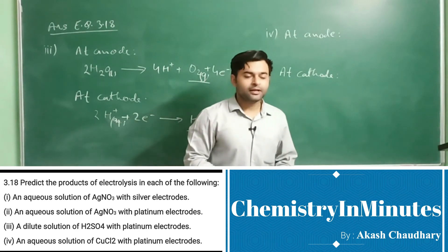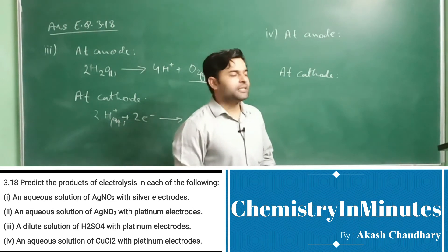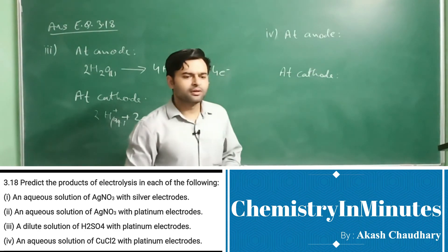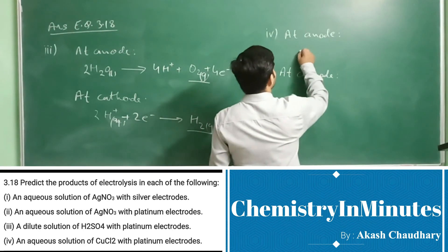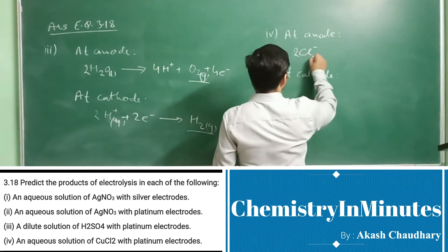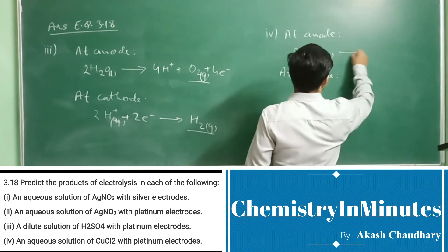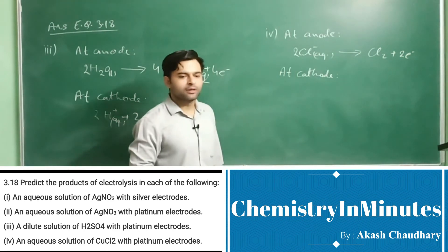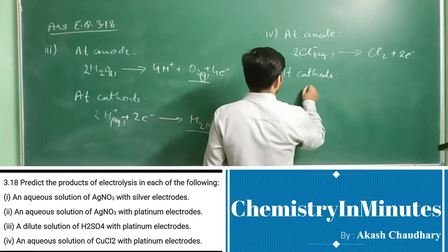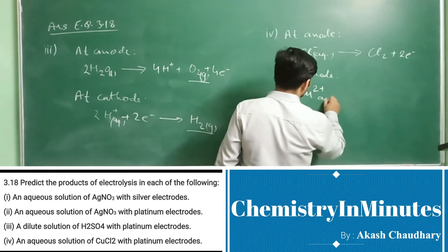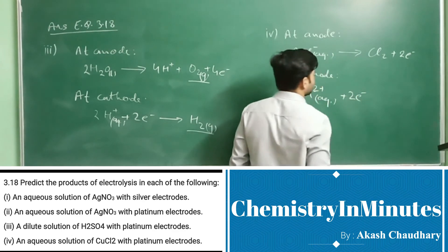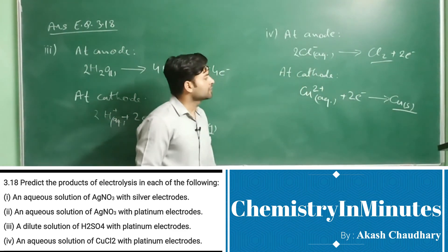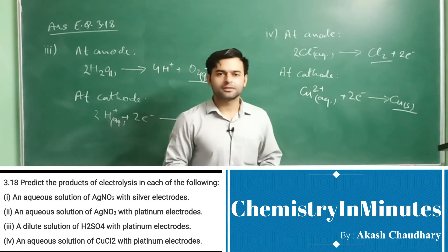In the fourth part, an aqueous solution of CuCl2 with platinum electrodes. At anode, oxidation of chloride ion will take place: 2Cl⁻(aq) → Cl2 + 2e⁻. At cathode, reduction of copper will take place: Cu²⁺(aq) + 2e⁻ → Cu(s). So these are the products at cathode and anode. This is the answer to the question.